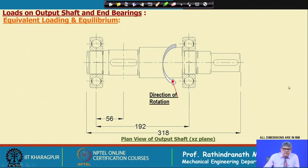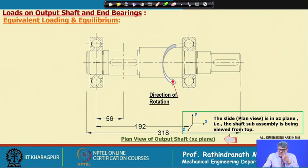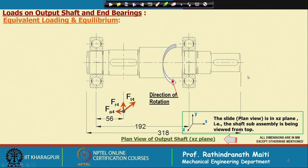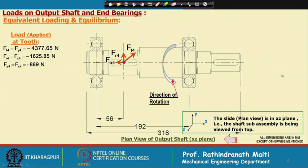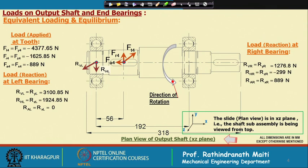For equivalent loading and equilibrium, in this slide the plan view is in the x-z plane, with the shaft assembly viewed from the top. We are shifting the load toward the axis to find the equivalent plan. Due to that shift, we find right-hand and left-hand forces. As we have shifted the load, there will be some moment also acting — not the bending moment, which is different and acts inside the shaft.